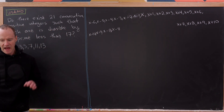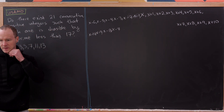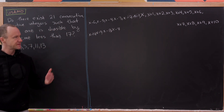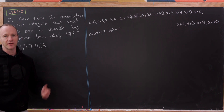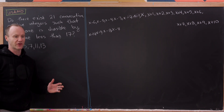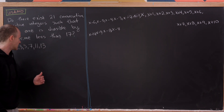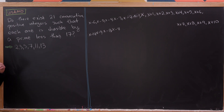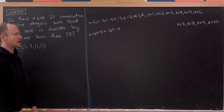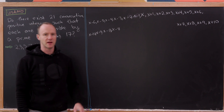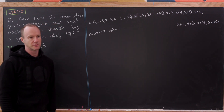Now I'd like to observe that a bunch of these numbers are even — every other number here is even. Every third number is a multiple of 3. Every fifth number is a multiple of 5. Every seventh number is a multiple of 7, and so on and so forth.